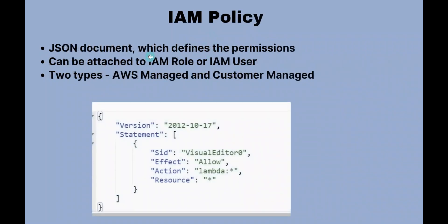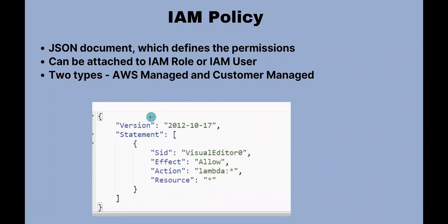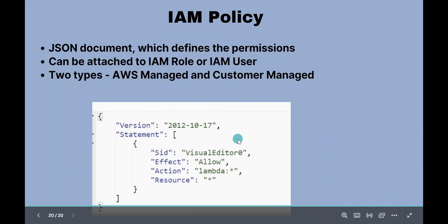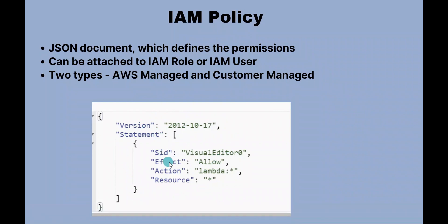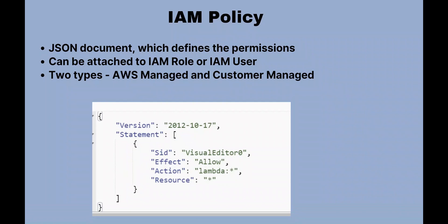The next core concept is IAM policy, which is a very important one. This is where we define all the permissions and accesses using a JSON document. A policy looks something like this — you can have a statement ID, an effect of 'allow,' the actions that are permitted, and the resources those permissions apply to. You define and create this policy, and then attach it to an IAM role or an IAM user.